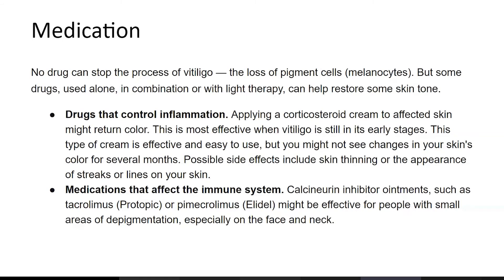Drugs that control inflammation: applying a corticosteroid cream to the affected skin might return color, and this is most effective when vitiligo is still in its early stages. This type of cream is effective and easy to use, but you might not see changes in your skin's color for several months. Possible side effects include skin thinning or the appearance of streaks or lines on your skin.